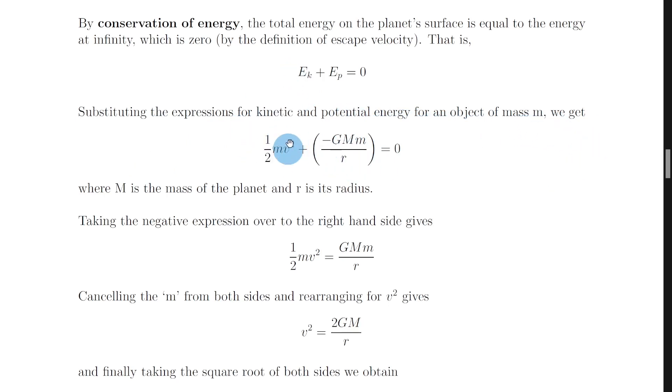So we have Ek is equal to half mv squared, and we also have Ep, the gravitational potential energy, is equal to minus GMm over r. So if you substitute in these two expressions, we get this thing here: a half mv squared plus minus GMm over r is equal to zero,